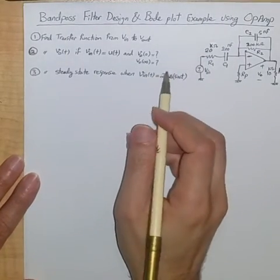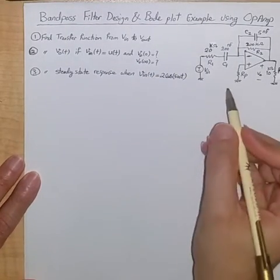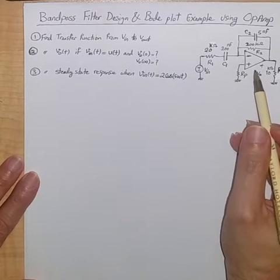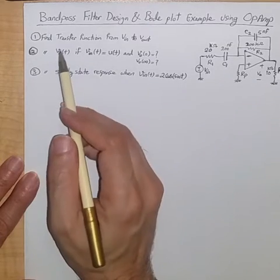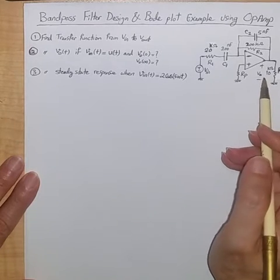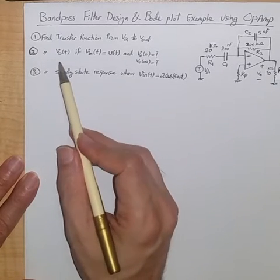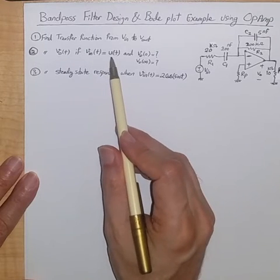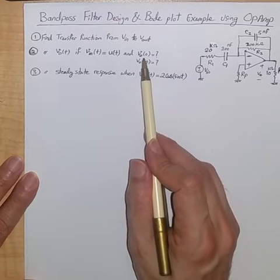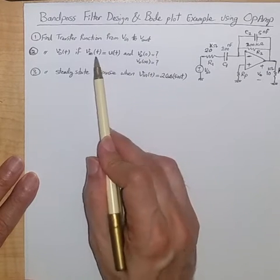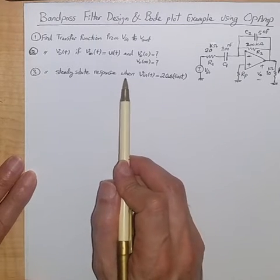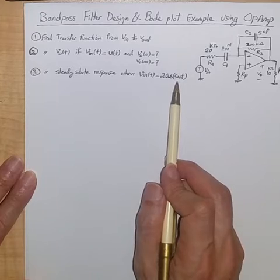Band pass filter design and Bode plot example using op amp. In this example, this band pass filter design using one op amp is given. We want to find the transfer function from input to output, then sketch the Bode plot, find the time domain response v_out if the input is a unit step function, find the output at time zero and at time infinity, and finally find the steady state response when input is 2cos(500t).